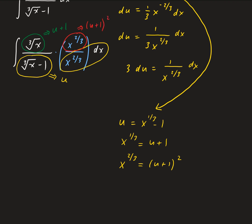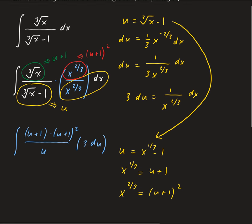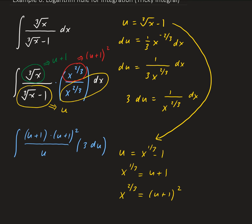Now everything is in terms of u. Our integral becomes: (u + 1) times (u + 1) squared, all divided by u, times 3 du. The factor of 3 comes from the fact that du equals 1 over 3 times x to the 2/3 dx, so multiplying both sides by 3 gives us 3 du.